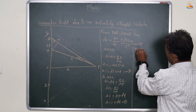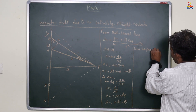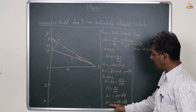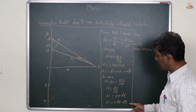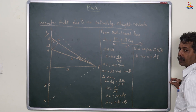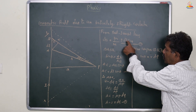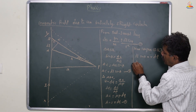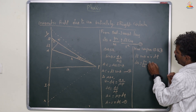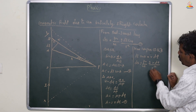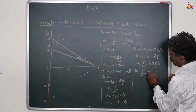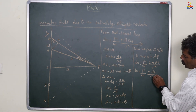Now compare equations 2 and 3. On the right-hand sides, both equal AC. So dl sinθ equals R into dφ. Substituting dl sinθ from equation 1 into the Biot-Savart expression: dB equals μ₀ by 4π times I into R dφ divided by R squared. Canceling R, dB equals μ₀ by 4π times I dφ divided by R. This is the fourth equation.